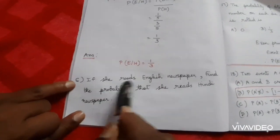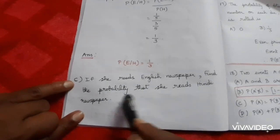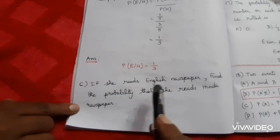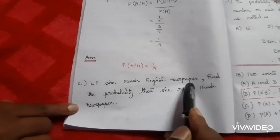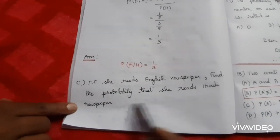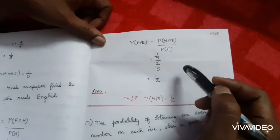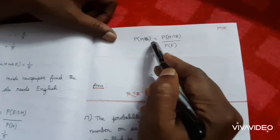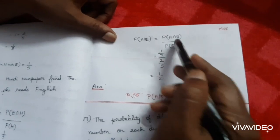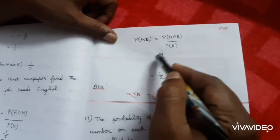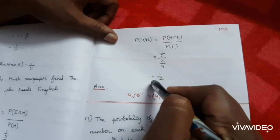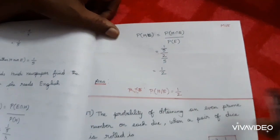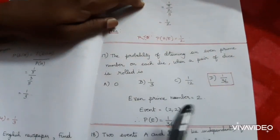Part C: If she reads English newspaper, find the probability that she reads Hindi newspaper. That is P(H|E) equals P(H intersection E) divided by P(E). Substitute 1/5 divided by 2/5, which equals 1/2. So P(H|E) equals 1/2.